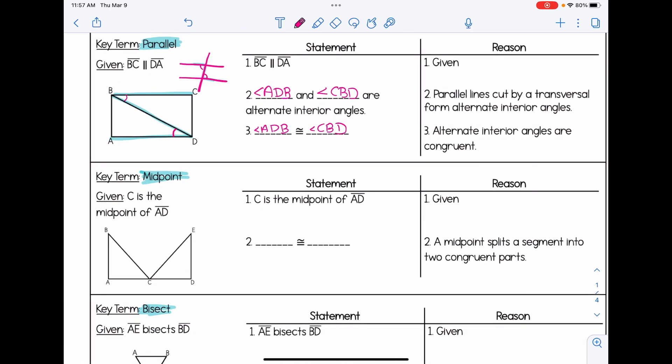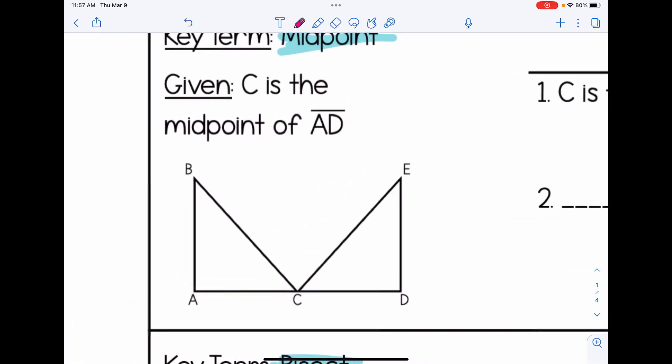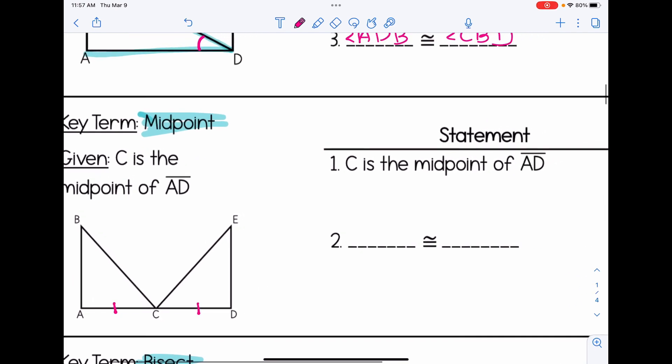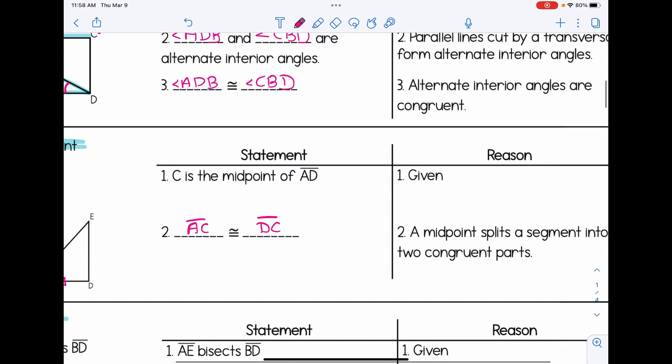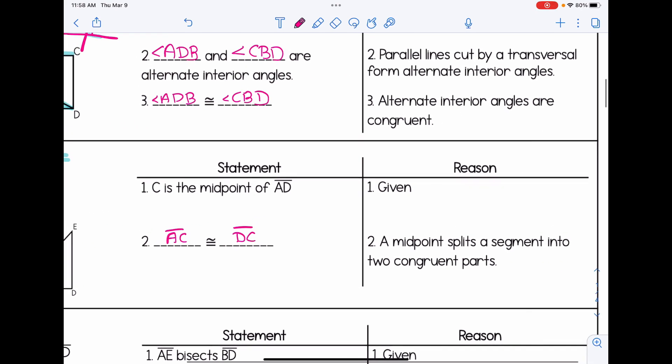Our third example is midpoint. Let's look at our diagram. We are given that C is the midpoint of AD. So midpoints basically split a line segment into two congruent parts. So C is taking AD and splitting it into two congruent parts. And those two congruent parts look like AC and DC. I'm going to go over here and fill that in. And there's our reasoning that we talked about. We were given that C is the midpoint of AD. And we know AC and DC are congruent because of our definition of midpoint.